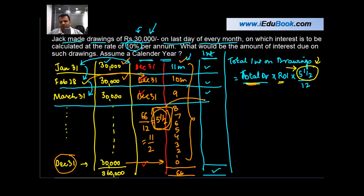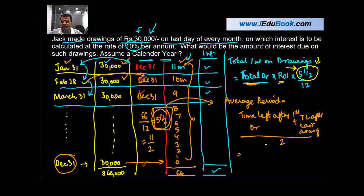This average period of five and a half can also be calculated using the following formula: time left after first drawing plus time left after last drawing, divided by 2. After first drawing, how much time was left? First drawing was made on January 31, so 11 months is left, plus how much time after last drawing? Last drawing is on December 31, so zero months. Zero divided by 2, or five and a half months.